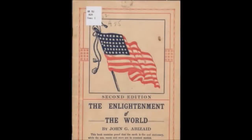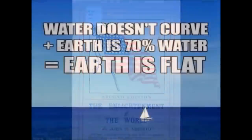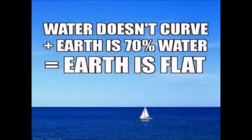The Enlightenment of the World by John Abazade. Chapter 1: The Water. You know that there is more water on the earth than dry land. Here is the first proof. The water proves that the earth is flat, level, and stationary.